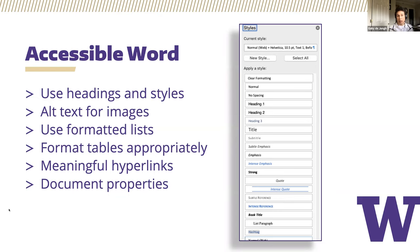Meaningful hyperlinks make it easier for users to determine what that link is all about. Rather than listing a URL which usually has a long string of letters and characters, using meaningful hyperlinks helps users know something about the destination of the link if they decide to click on it. Try to avoid using links with vague language such as 'click here.'